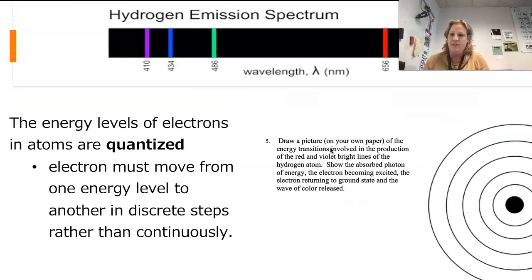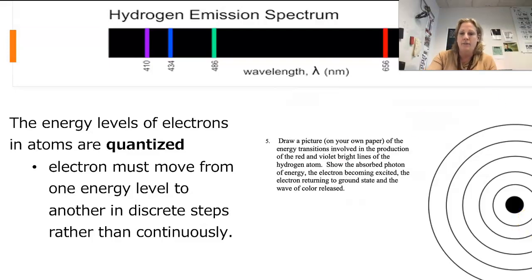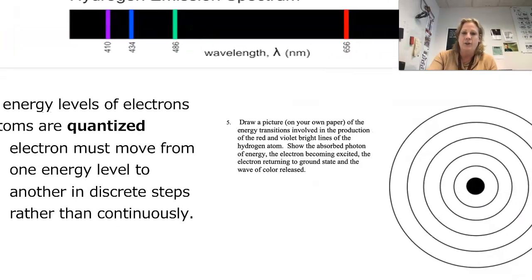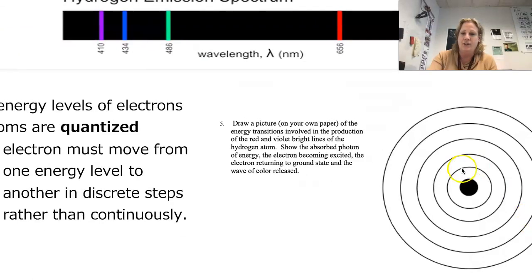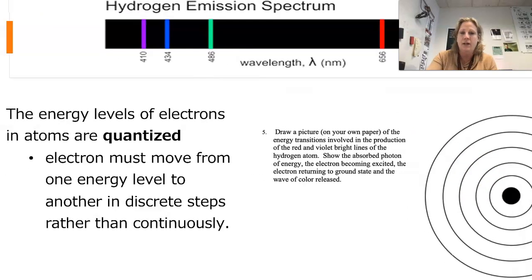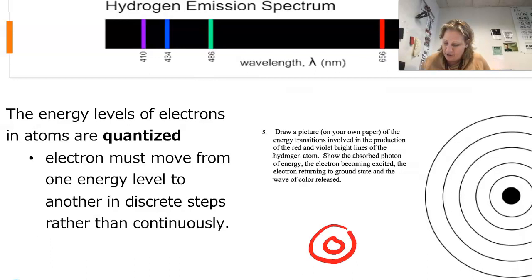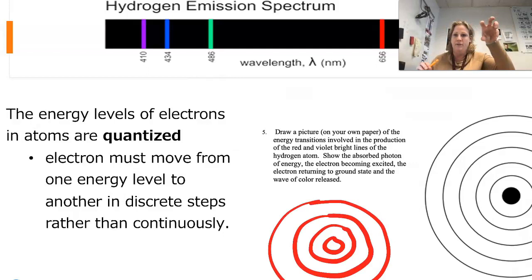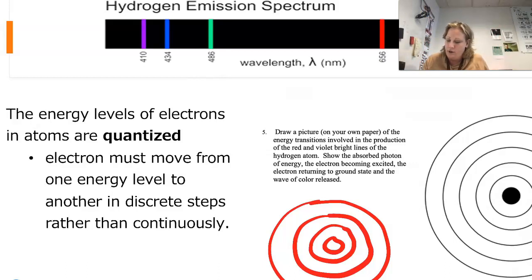The energy levels in an atom are quantized. Looking at the Bohr model — just these little circles — the electrons have to be in these energy levels. It's like the rungs of a ladder: if you're climbing a ladder, you have to be on one rung or another; you can't be suspended in between.